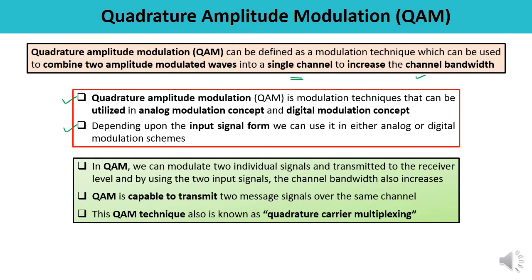In the case of QAM, we can modulate two individual signals and transmit them to the receiver. By using two input signals, the channel bandwidth will increase. QAM is capable of transmitting two message signals over the same channel. This technique is also known as quadrature carrier multiplexing, because it is capable of transmitting two messages on the same channel, providing increased channel bandwidth.